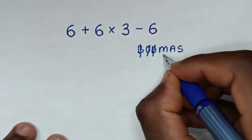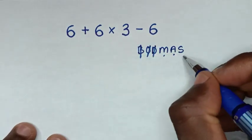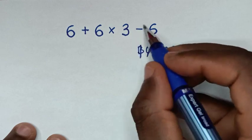M is multiplication, we have multiplication which is this. A is addition, we have here addition. S is subtraction, we have here subtraction.